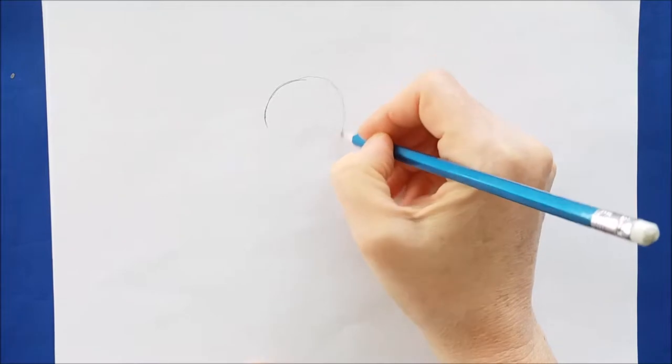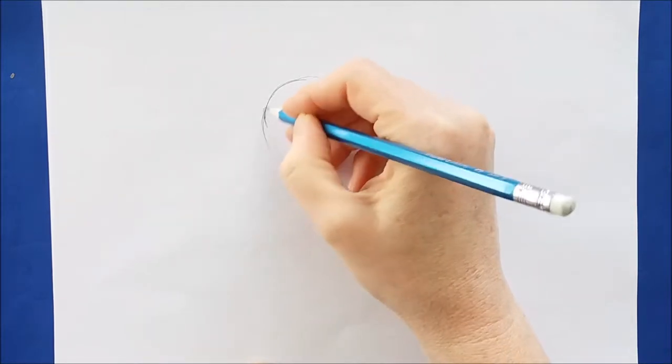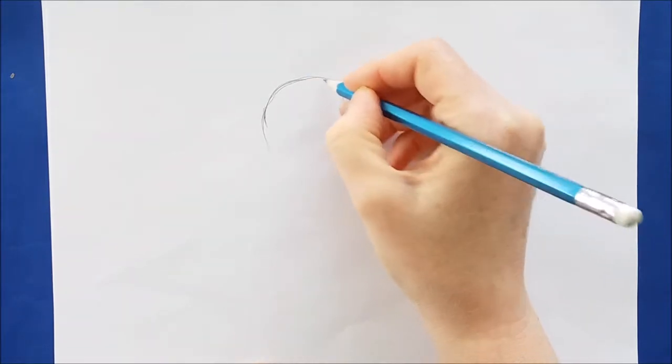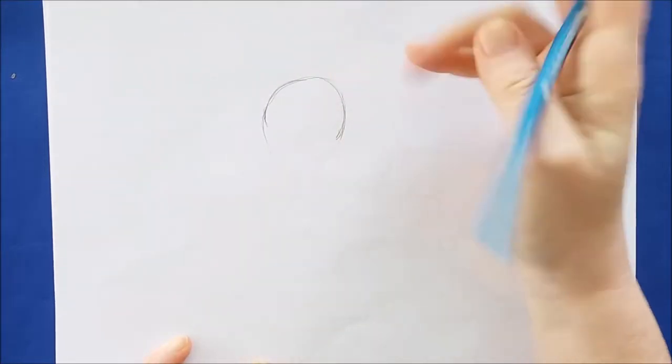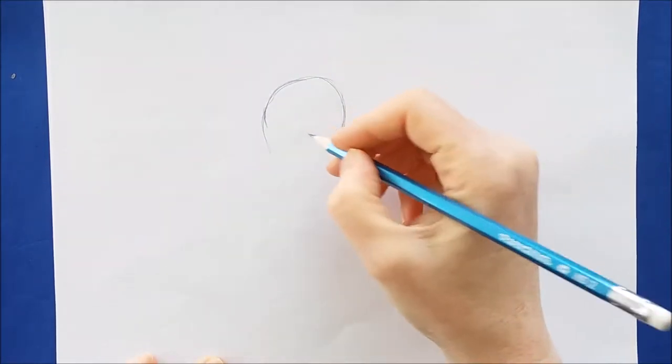And to begin with, we'll start our corgi by drawing the head. And the head is just a circle, and I'm going to keep the bottom of this circle open.